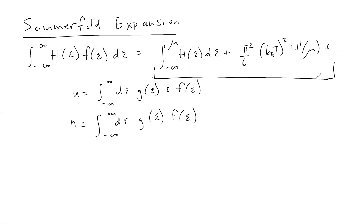We'll start first with the total energy, then write down the integral for the density. The integral for the energy, I'm going to call equation 1. The first order term is the integral from zero to mu of H times dE, but H in the case of U is G times E.